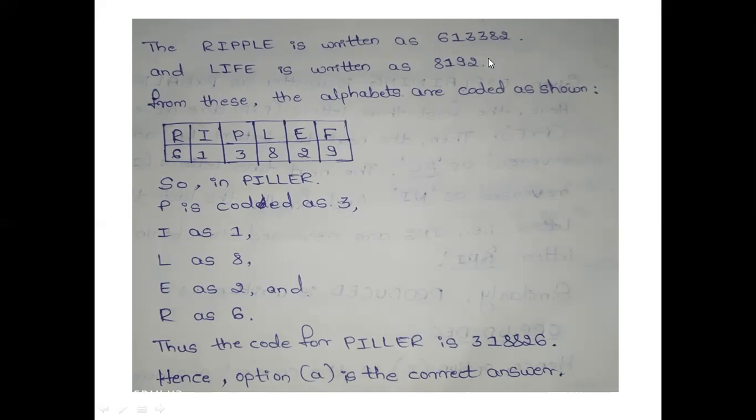P is coded as 3. So here 3 appears twice. Next L. L is 8. So ripple has L as 8. Life has 8. So 8. E is 2, mentioned. So 2. And F is 9. So 9 is given.